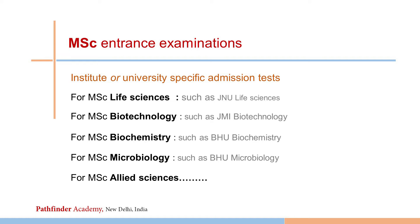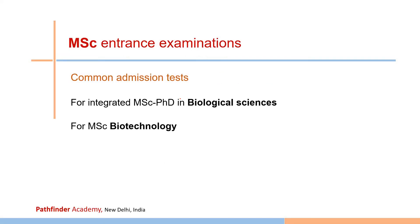You can choose institute or university-specific admission tests based on your subject — MSc Life Sciences, MSc Biotechnology, MSc Biochemistry, or MSc Microbiology. There are two subjects where common admission tests exist: biological or life sciences, and biotechnology or allied fields. For the integrated MSc-PhD in biological sciences and for MSc Biotechnology in allied fields, there are specific common admission tests available.